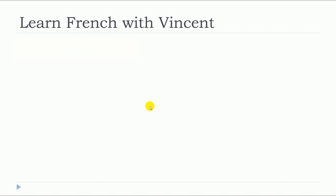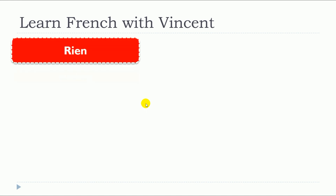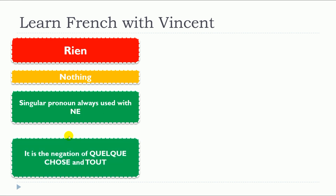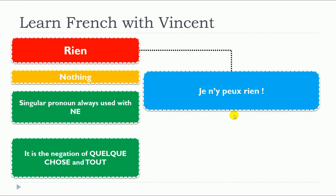So this lesson is about rien. Rien means nothing. It's a singular pronoun, always used with ne. It is the negation of quelque chose and tout. So let's see some examples now.